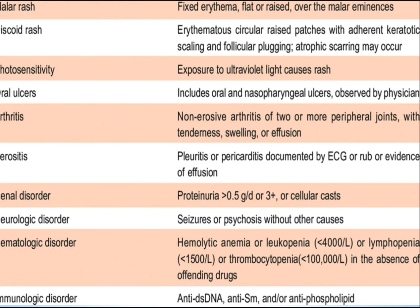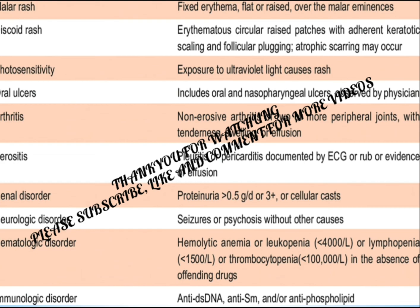Serositis: pleuritis or pericarditis documented by ECG, rub, or evidence of effusion. Renal disorder: proteinuria greater than 0.5 grams per day, or 3+ protein on urinalysis, or cellular casts. Neurologic disorder: seizures or psychosis without other causes — if the patient has another neurological condition causing seizures, it does not fall under SLE. Hematologic disorder: hemolytic anemia, or leukopenia less than 4,000/μL, or lymphopenia less than 1,500/μL, or thrombocytopenia less than 100,000/μL in the absence of offending drugs. Immunologic disorder: anti-double-stranded DNA, anti-Sm, and/or antiphospholipid antibodies.